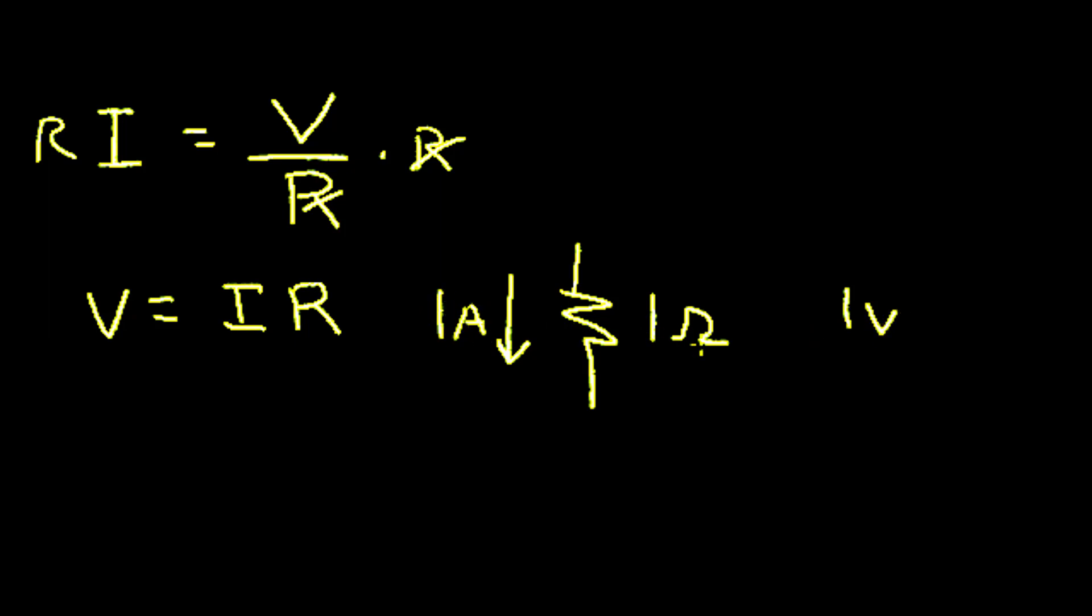If we increase the resistor from say one ohm to two ohms with one amp we have two volts. If we have two ohms, if we have four ohms times one amp we have four volts.